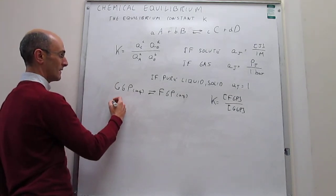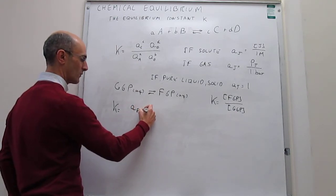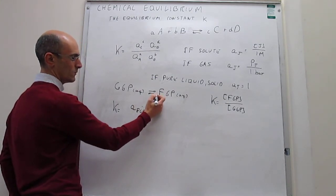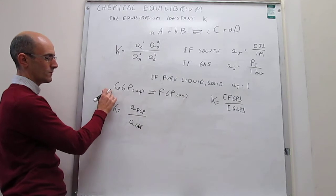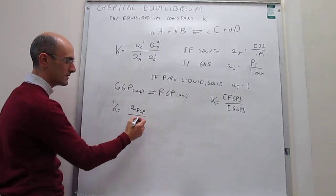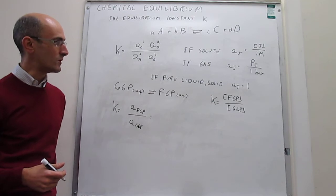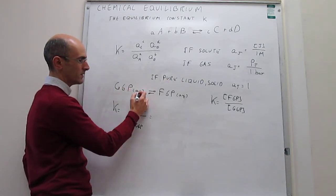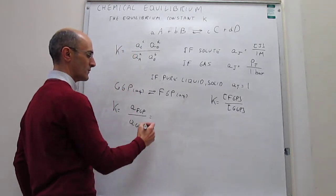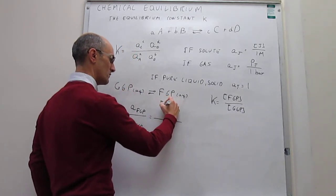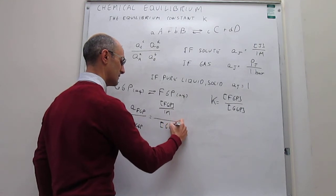The correct form is to write the equilibrium constant as the activity of fructose-6-phosphate to the power of the stoichiometric coefficient of 1, over the activity of glucose-6-phosphate to the power of the stoichiometric coefficient of 1. Now, how do we map those activities into useful measures of concentration? We recognize these are simply solutes in an aqueous solution where the solvent is water. The mapping gives the concentration of fructose-6-phosphate over one molar, divided by the concentration of glucose-6-phosphate over one molar.